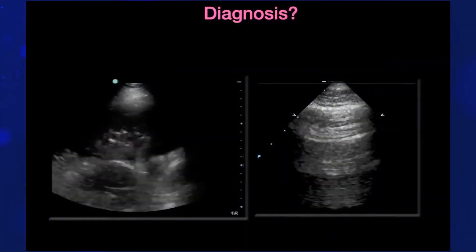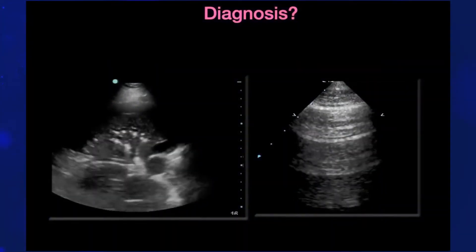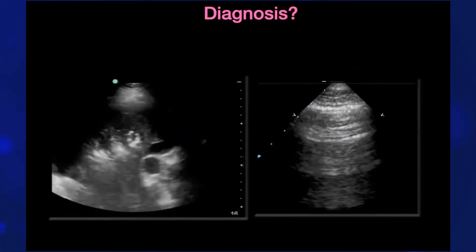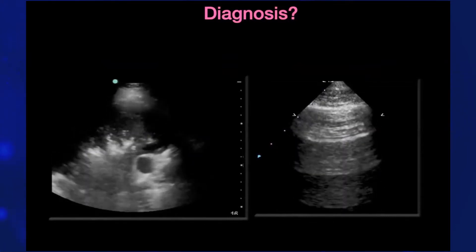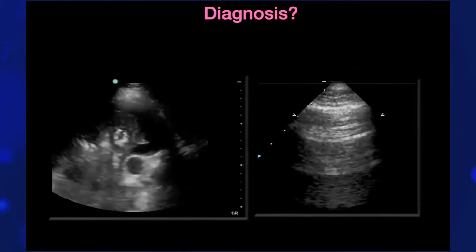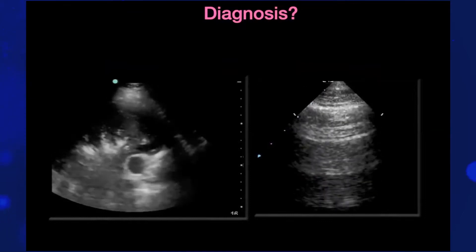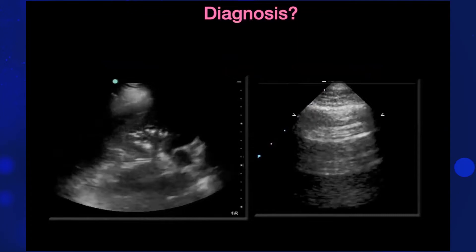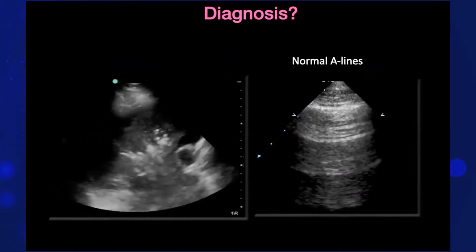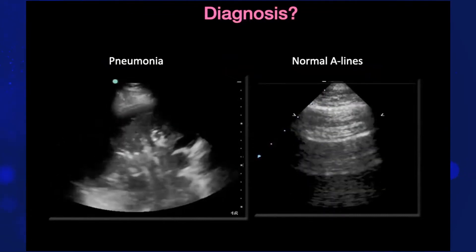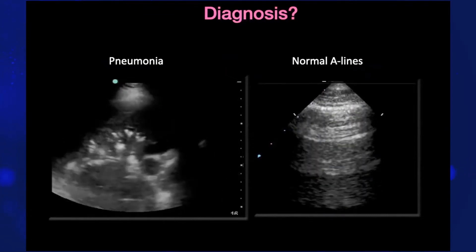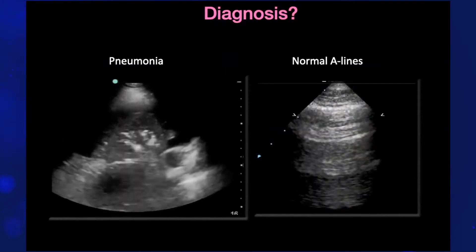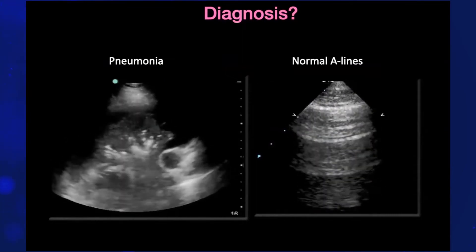All right, let's go. What do you think this is? Do you see large consolidation? Yes, pneumonia. How about here? Normal or abnormal? That's normal. So pneumonia on the left side and normal lung on the right side.